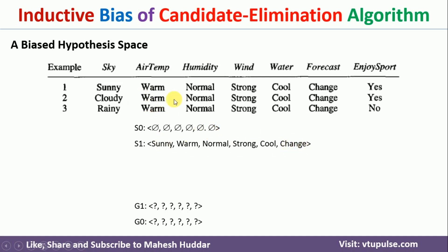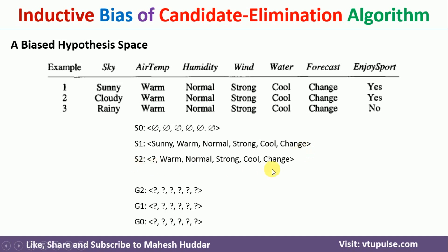For the second positive example, the generic boundary contains all question marks, so it matches — classification is positive, expected is positive, so it is retained. For the specific boundary, the first attribute is cloudy and the specific boundary has sunny — cloudy does not match sunny, so we replace it with a question mark as the next minimal generalization. The remaining attributes all match and are retained as is.